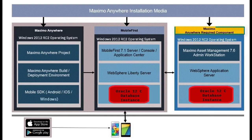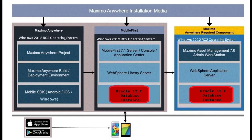Videos 2 and 3 cover Maximo Anywhere prerequisites and administration tasks. Videos 4 through 6 cover the overview and installation of the required components. Video 7 covers installing the middleware, IBM WebSphere Application Server, Liberty version, on the Mobile First Server.